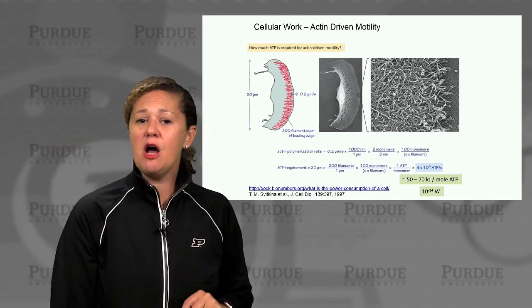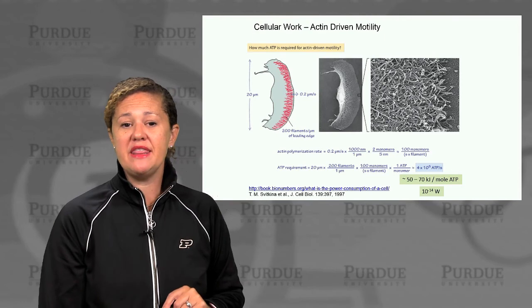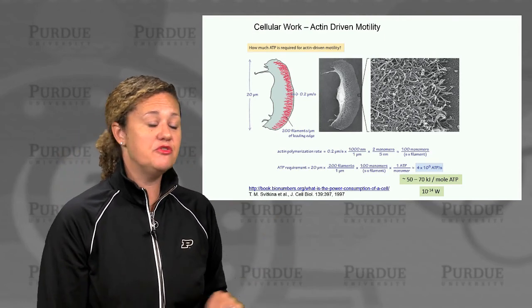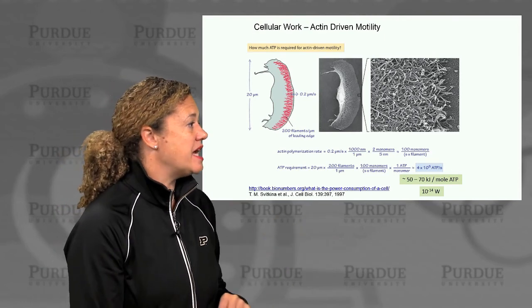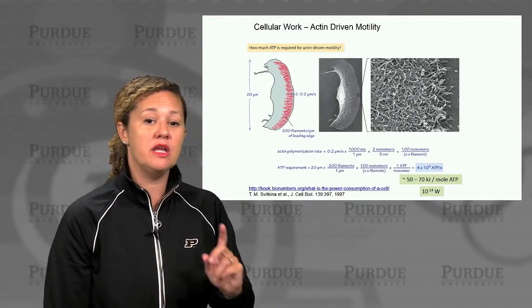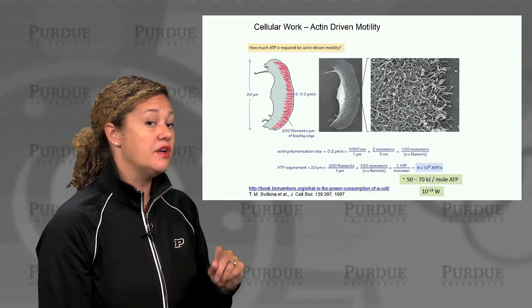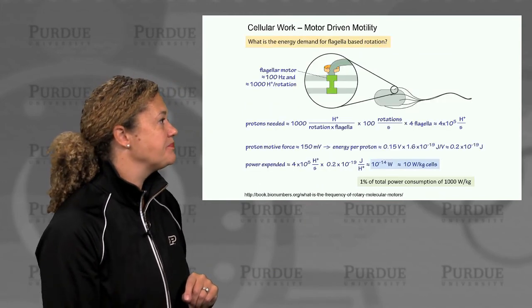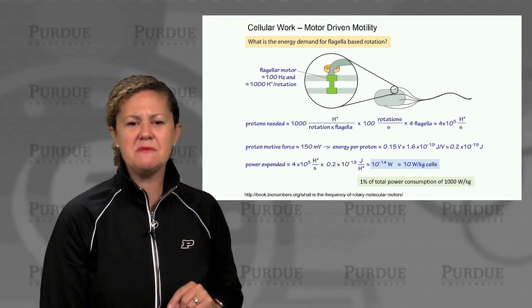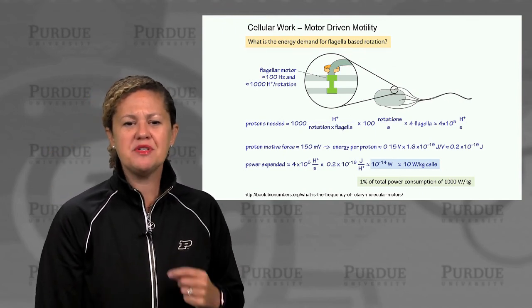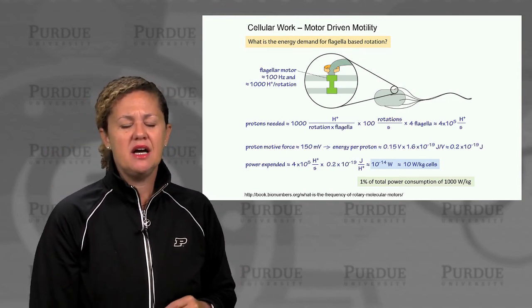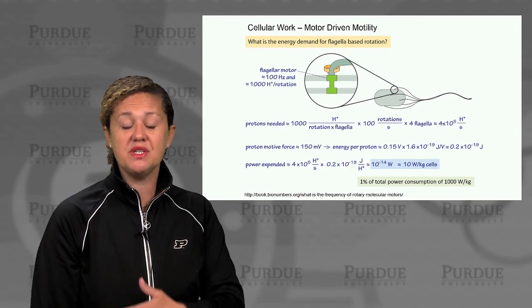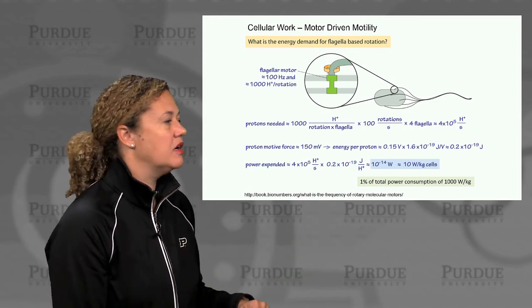This is much smaller than you might have thought — maybe you expected movement to take a majority of the cell's energy, but the number is actually quite small. We'll look at bacteria in a second and compare it to overall power consumption rate, and start thinking about energy budgets: what percentage of the cell's energy budget goes toward different types of work.